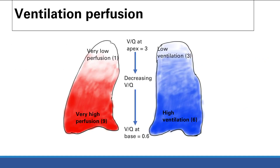Now we discuss ventilation-perfusion. Ventilation refers to how much gas is sent to the alveoli; perfusion refers to how much blood is sent to the pulmonary capillaries perfusing those alveoli. Looking at a diagram of perfusion in the lung, the top of the lung has very low perfusion while the bottom has very high perfusion. Because of gravity, blood pools downward, so the bottom of the lung gets roughly nine times more blood than the top.